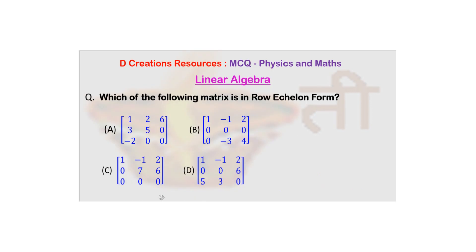Let's go back to the question. Now, if you see in the first case, where one is the leading entry, but three and minus two are non-zero entries below it. So again, A is also ruled out.